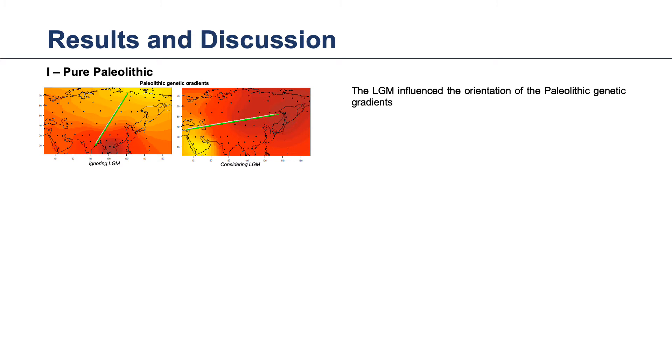This genetic gradient may be a consequence of allele surfing. During LGM, the north of Asia was covered in ice, and humans had to retreat to the south, and later re-expanded towards the north. This direction is orthogonal to the orientation of the genetic gradient, which is expected in allele surfing.